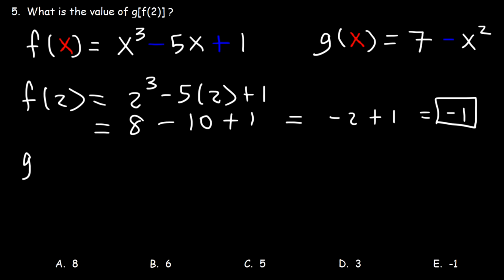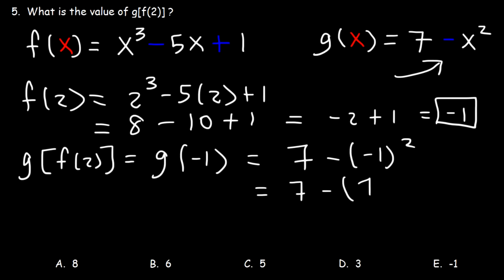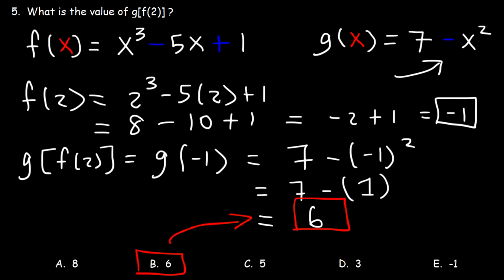And we're looking for g of f of 2. Since f of 2 is negative 1, we need to find g of negative 1. So it's 7 minus negative 1 squared. Negative 1 squared is negative 1 times negative 1, that's positive 1. And 7 minus 1 is 6. So g of f of 2 is equal to 6. Therefore, B is the right answer.